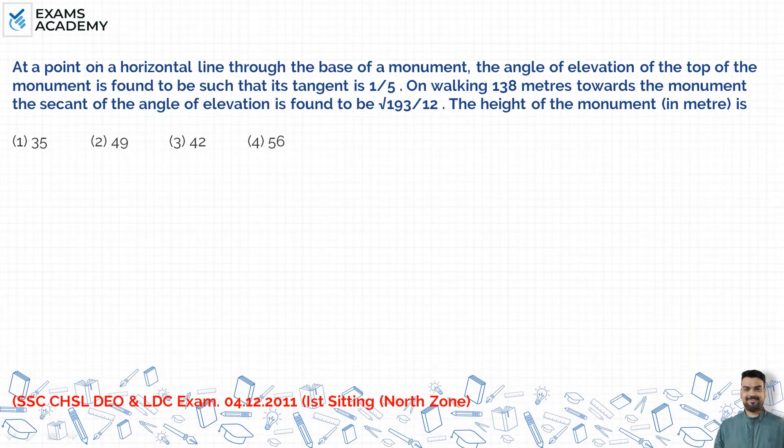Let's look at this trigonometry problem. At a point on a horizontal line through the base of a monument, the angle of elevation of the top of the monument is found to be such that its tangent is 1/5. On walking 138 meters towards the monument, the secant of the angle of elevation is found to be root 193 by 12. Find the height of the monument.